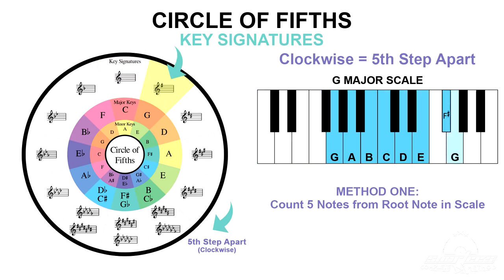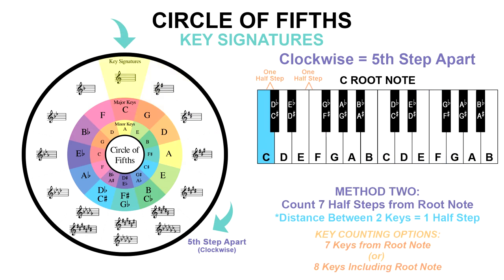The G major scale is G, A, B, C, D, E, F sharp. If you count five notes from G, you get G, A, B, C, D — so D is a fifth step up from G. For those who don't know their scales yet, another easy way to find the fifth is to count seven half steps on the piano, since each individual key represents a half step or semitone. For example, count seven half steps from C: C sharp, D, D sharp, E, F, F sharp, G — and you get G. If you count seven half steps from G, you'll get D.